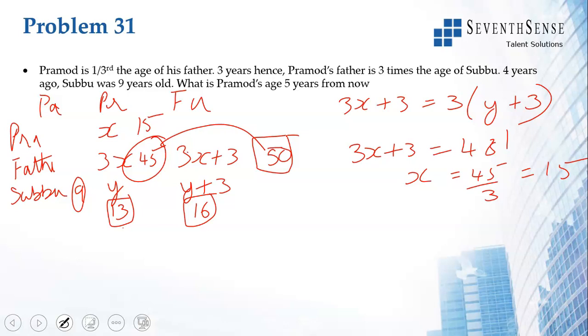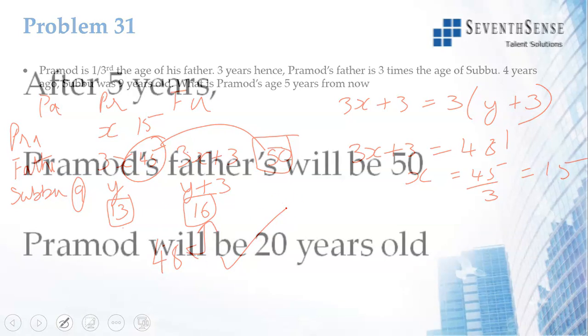To verify: father's age is 45, three years hence he is 48. Subhu three years hence is 16, and 3 × 16 = 48. Correct.